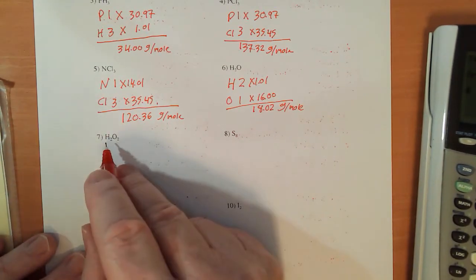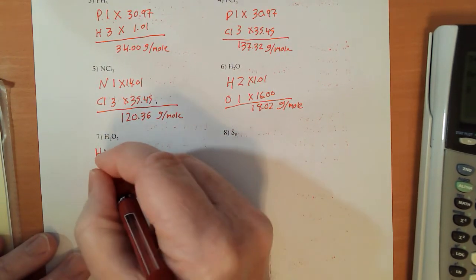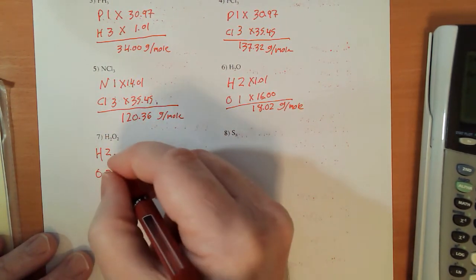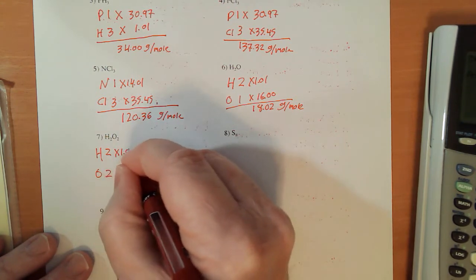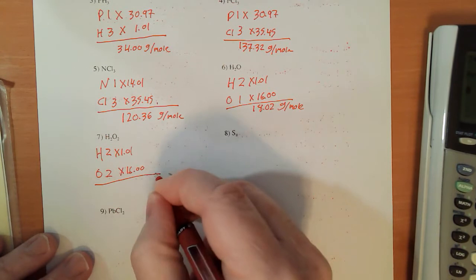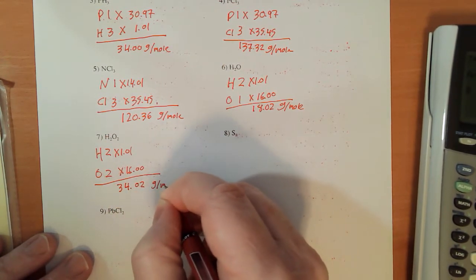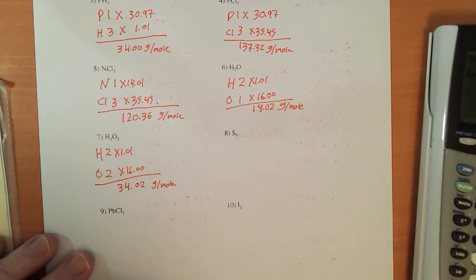Looks similar, but it's different, hydrogen peroxide. Hydrogen and oxygen, two and two. 1.01 times 2 and 16.00 times 2, that gives me 34.02 grams per mole.